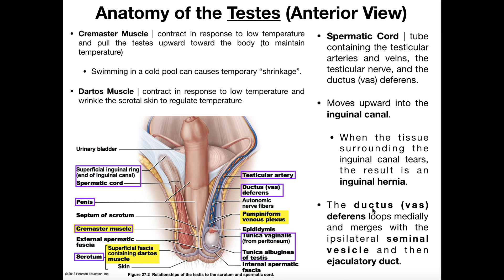The ductus deferens is a path for sperm cells to travel through during ejaculation. Sperm cells are produced in the testes, and under the control of ejaculation, they move up through the ductus deferens, which travels through the spermatic cord. Eventually, that pathway leads out through the urethra — that's how the sperm cells contained in the semen are going to exit.